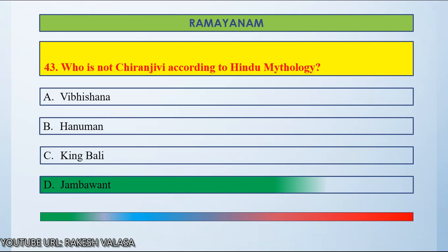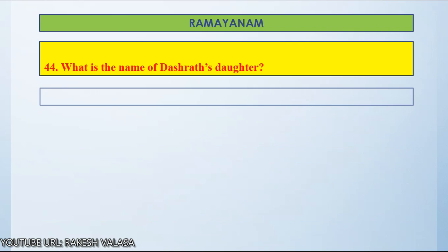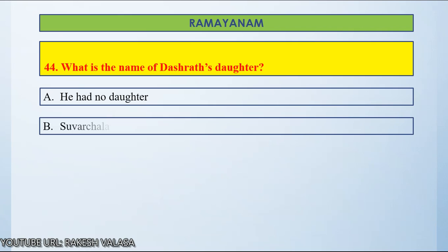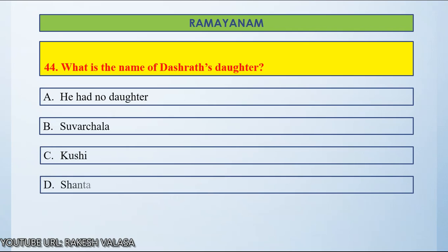Jambavanth is not Chiranjivi according to Hindu mythology. Question number 44: What is the name of Dasharatha's daughter? Option A, He had no daughter. Option B, Suvarchala. Option C, Kushi. Option D, Shanta. Let us count and start.